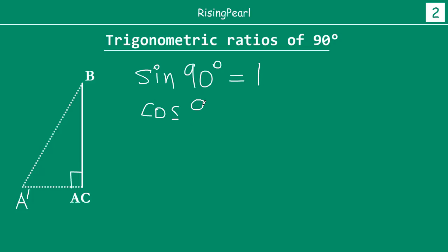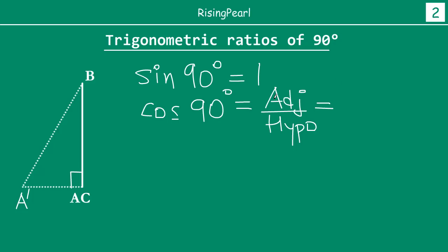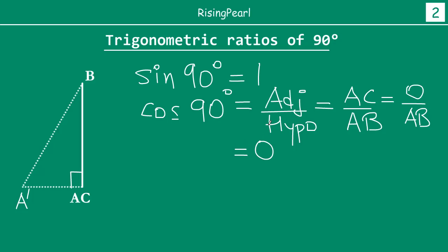What about cos 90 degrees? Cos of any angle is the ratio of adjacent side divided by hypotenuse. The adjacent side is AC and the hypotenuse is AB. When we have 90 degrees, A and C are the same point, so the length of AC is 0. Therefore we have 0 divided by AB, and since 0 divided by any number is 0, cos 90 degrees equals 0.